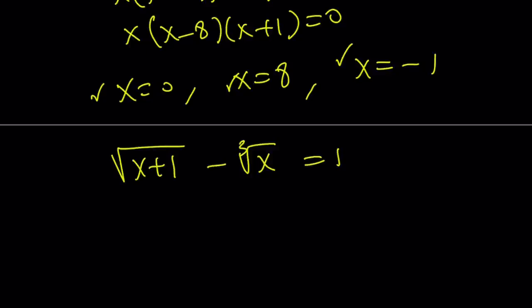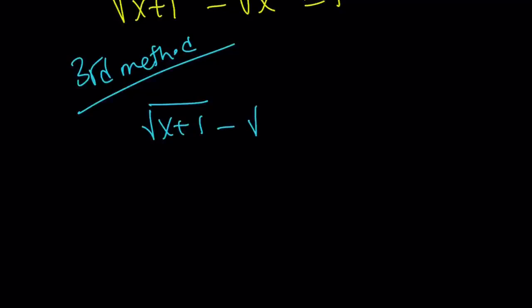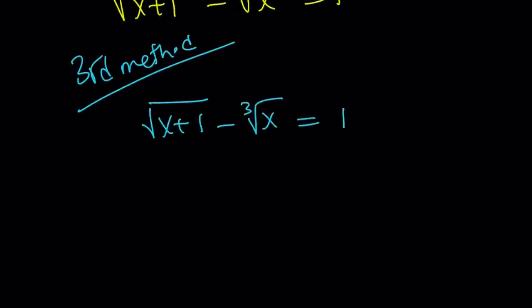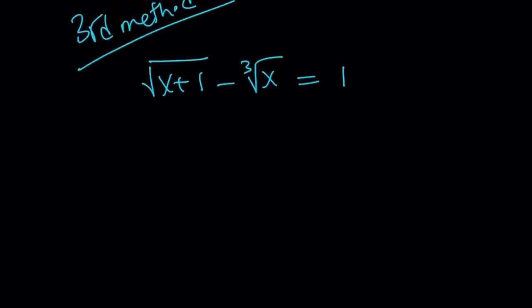Let's go ahead and do the third method, and then we'll look at the graph. My first method was kind of terrible, right? Because do you want to cube both sides in an equation like this? If they're all cube roots, fine. But if you have the mixture — the square root and cube root together — don't do that. So the third method, in my opinion, is the best. You decide.